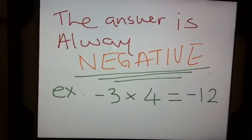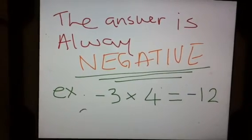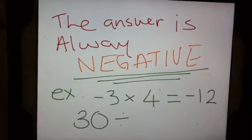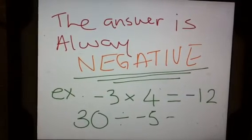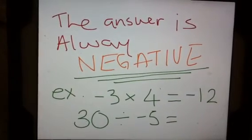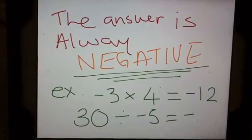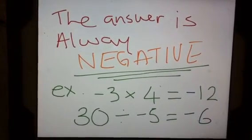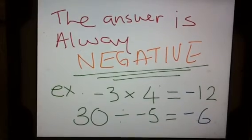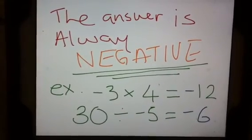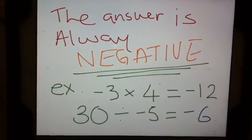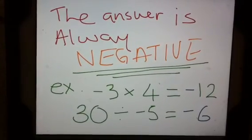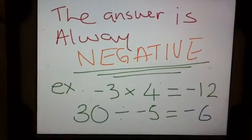One more example: a division question — 30 divided by negative 5 is negative 6. Make sure you've taken notes on this. The next video will have some questions for you to try out. Try them for homework and make sure you're prepared for next class.